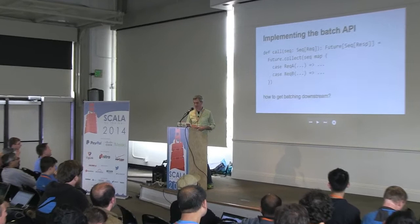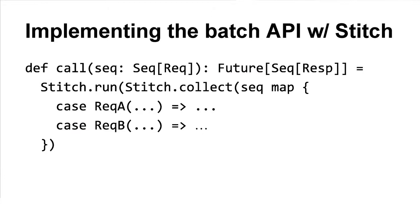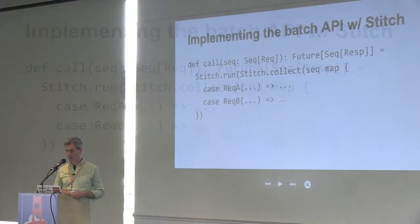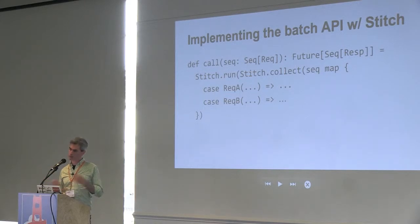It is a big problem at Twitter, and this problem has led to really serious application architecture problems where the entire application is structured around this need for retaining these batches. Here's how this works in Stitch: we can write these single-key calls and do everything in the natural way, process these requests one at a time, and collect them up. When we call Stitch run, what we're doing is actually finding all the batches, executing the RPC calls, and converting the entire thing into a future that we can return up the stack.